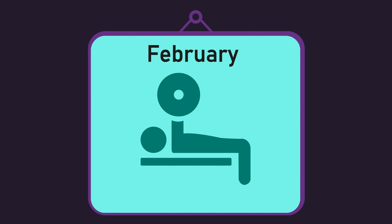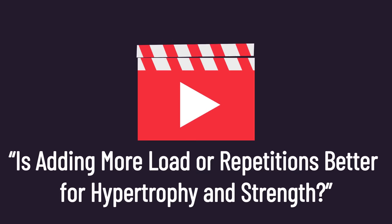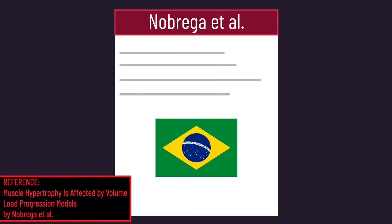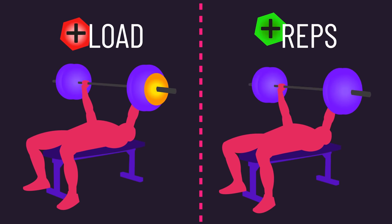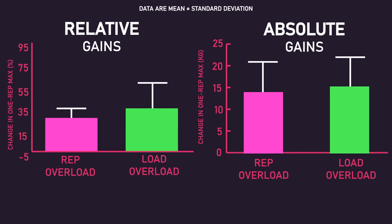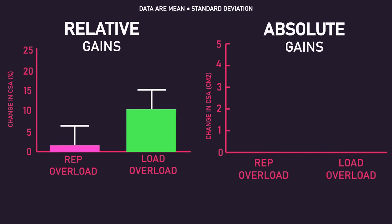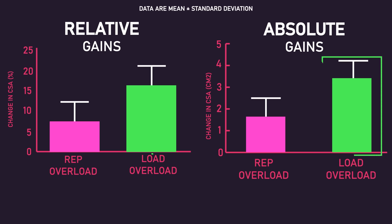Back in February this year, some may know I released a video around a Brazilian study that had dropped at that time, comparing progressive overload via load or rep increases. Leg extension strength gains were not different between progressing through load or reps, but muscle growth of the vastus lateralis was greater for the load versus rep progression.